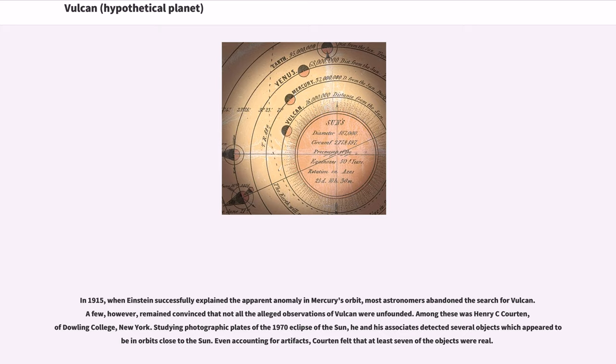In 1915, when Einstein successfully explained the apparent anomaly in Mercury's orbit, most astronomers abandoned the search for Vulcan. A few, however, remained convinced that not all the alleged observations of Vulcan were unfounded. Among these was Henry C. Courten, of Dowling College, New York.